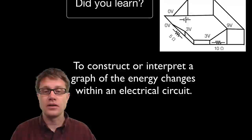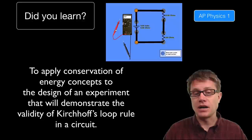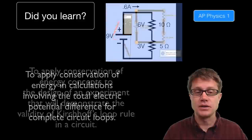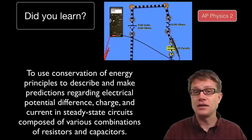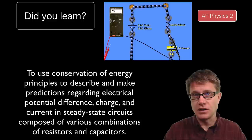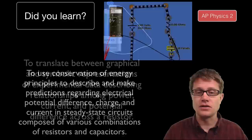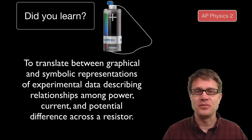Could you construct or interpret a graph of energy changes? Think of it like a roller coaster. Could you apply conservation of energy to show how Kirchhoff's loop rule works — that the voltage lift equals the sum of all the voltage drops? Could you apply this to solve a simple problem? Could you then study capacitors in steady-state circuits? Steady state means after the transient phase — when a little charge is still moving — it eventually settles. Understanding how a capacitor works in a circuit and tying it to potential energy, the ability of charge to do work — I hope that was helpful.